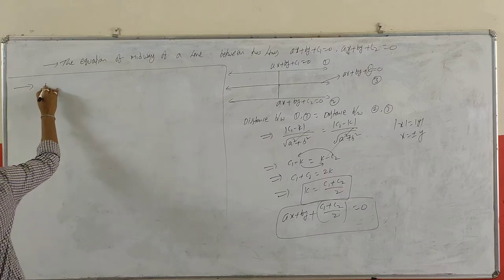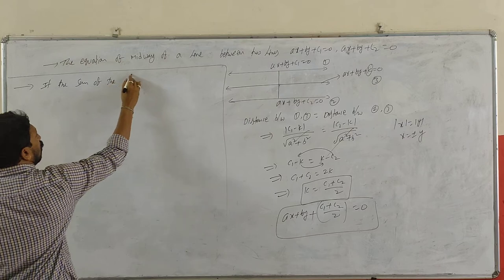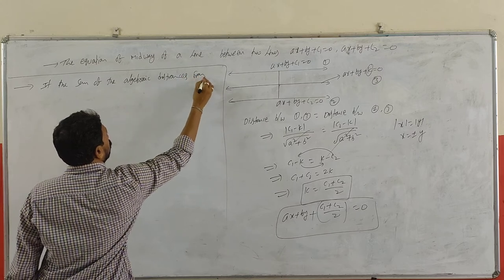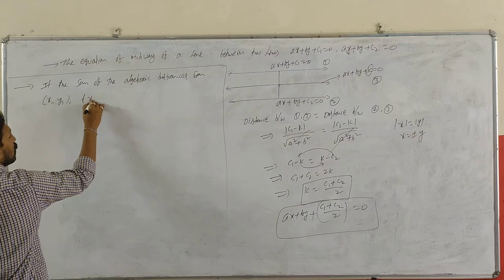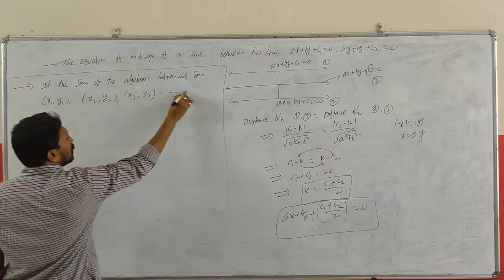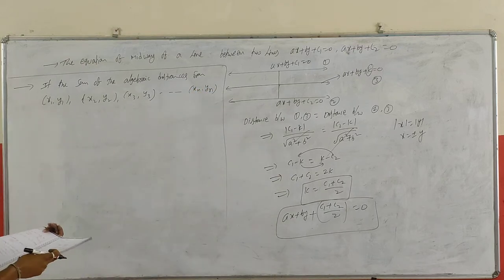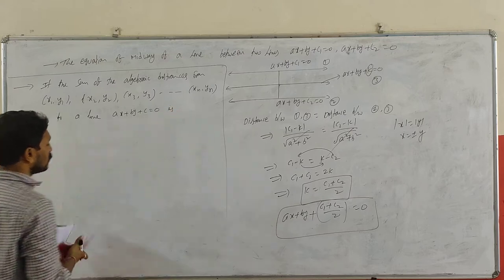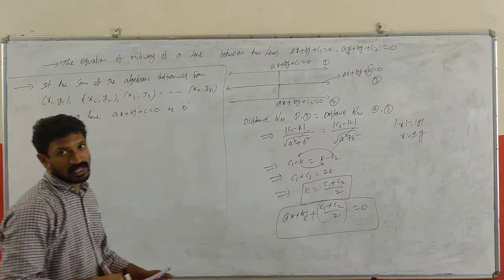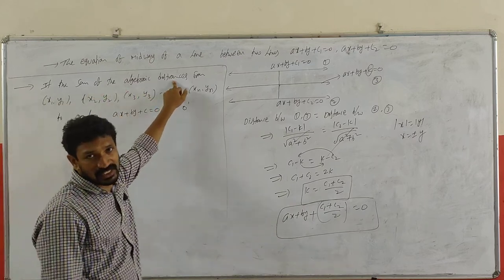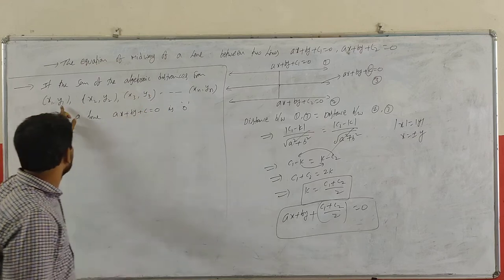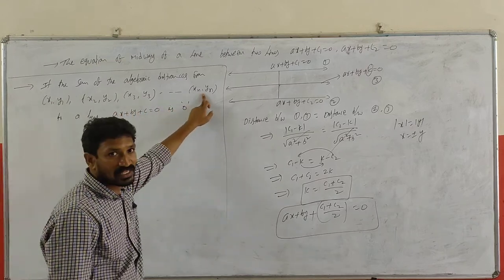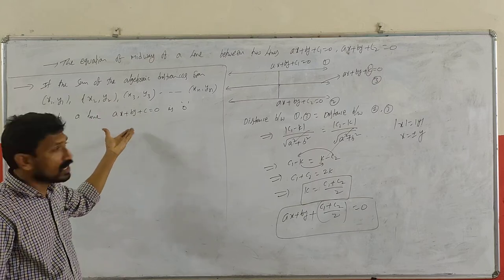Next concept: if the sum of the algebraic distances from the points (x1,y1), (x2,y2), (x3,y3), ..., (xn,yn) to the line Ax+By+C=0 is equal to 0, then what can we conclude? The algebraic (perpendicular) distances from each point to the line sum to 0.